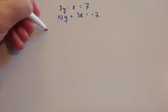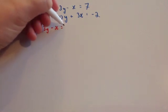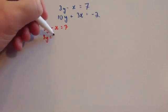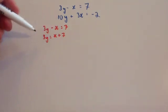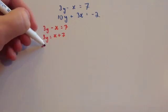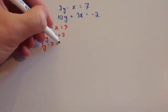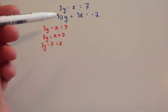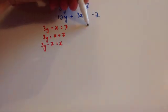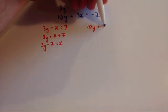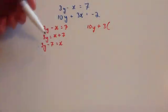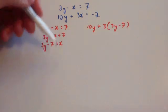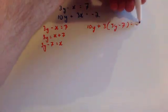We'll make x the subject of the top equation. Starting with 3y subtract x equals 7: adding x to both sides gives 3y equals x plus 7, then taking 7 away from both sides gives 3y subtract 7 equals x. So x equals 3y minus 7. Now we substitute that into the second equation: 10y plus 3 times (3y minus 7), replacing x with what it equals, equals negative 2.